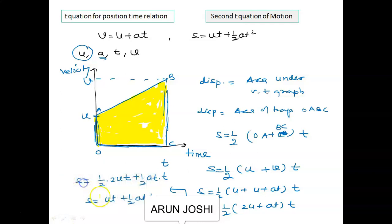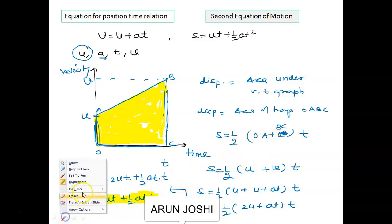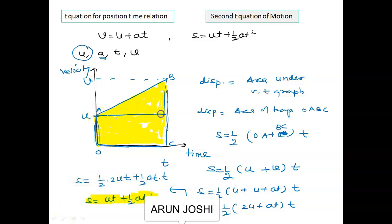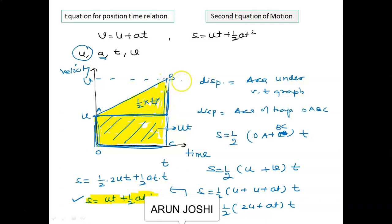This is the derivation of the second equation of motion. Alternatively, using the rectangle plus triangle method: area of rectangle = ut, area of triangle = ½ × base × height = ½ × t × (v − u). Substituting v = u + at, the u cancels and we get ½at². Adding both: s = ut + ½at². This is the graphical analysis of the second equation of motion.